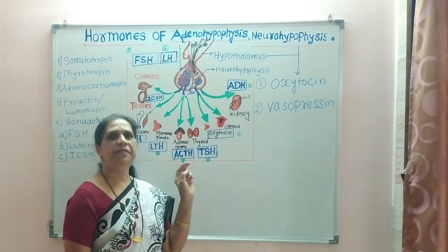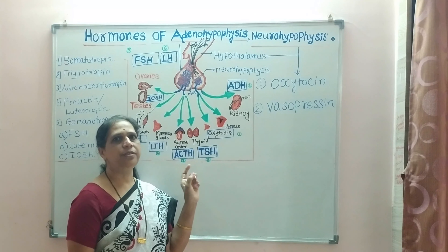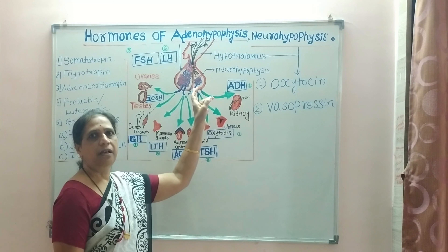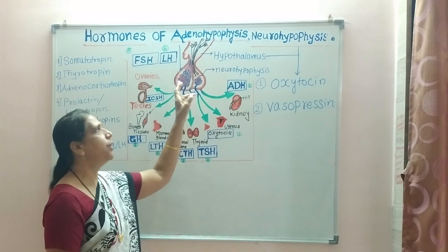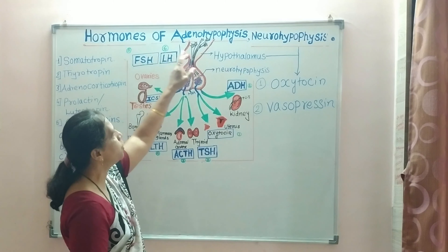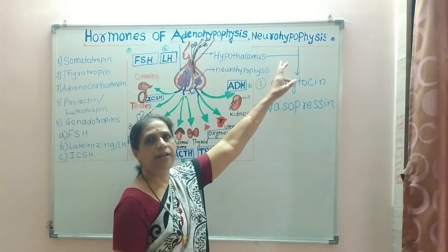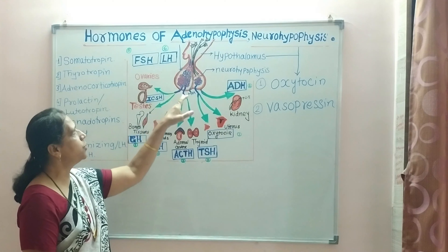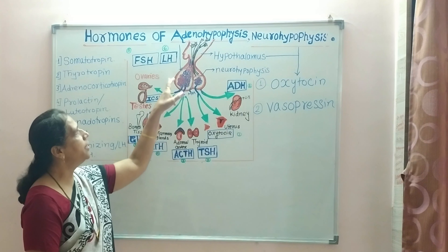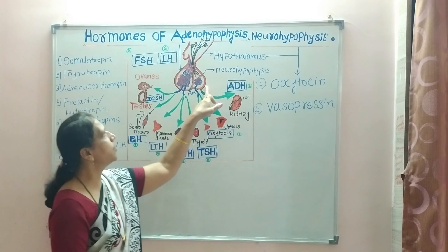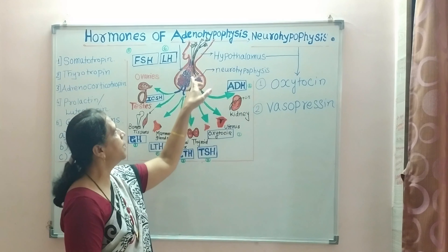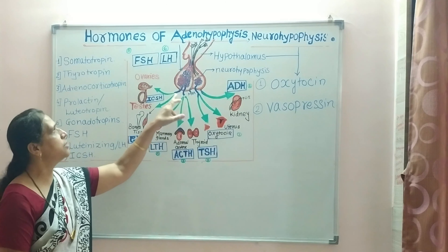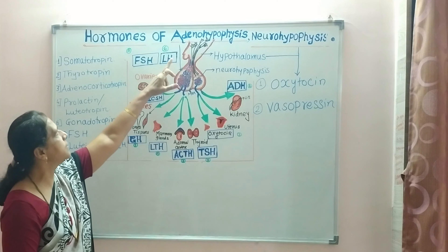Hello students. In the previous lecture we studied the morphological and anatomical structure of the pituitary gland. Today we are going to discuss the hormones of adenohypophysis and neurohypophysis. There are some hormones secreted by the anterior pituitary and some hormones secreted by the posterior pituitary. First, the hormones secreted by adenohypophysis.